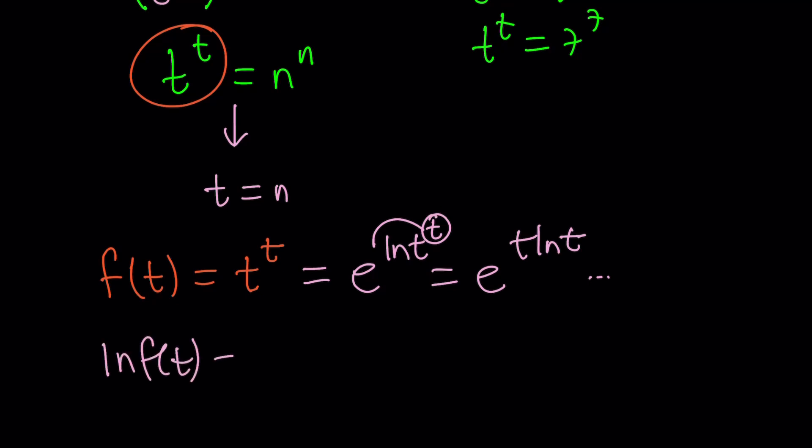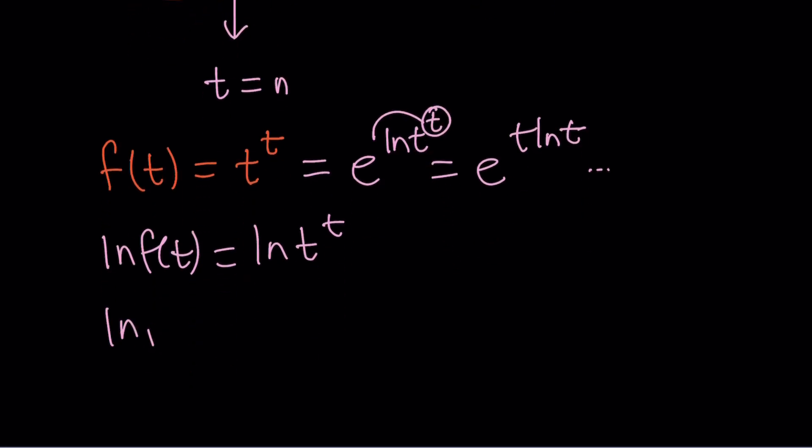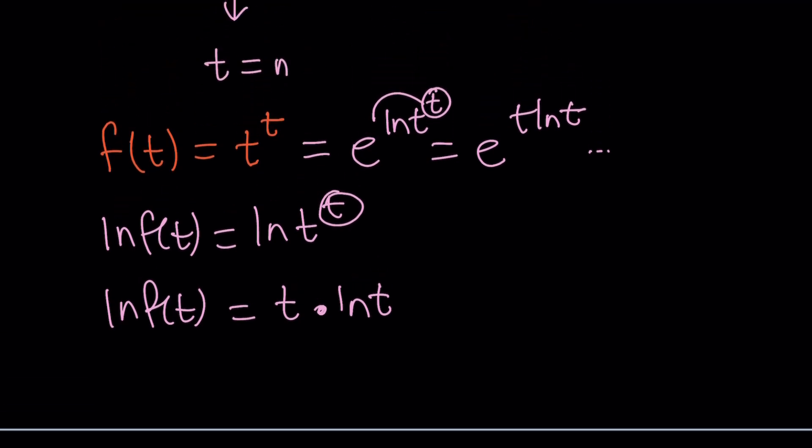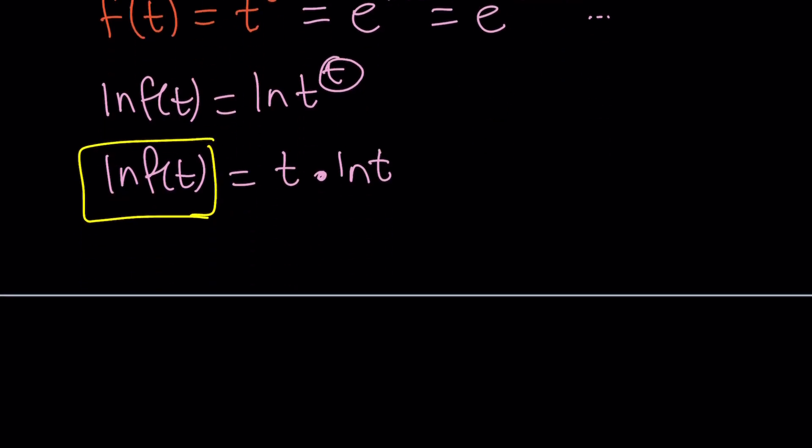Or you can differentiate it differently, like this is usually the method that I follow. You can ln both sides, which is the same thing by the way but I just like it better, and then use properties of logs, move this to the front, and then just differentiate like this. Same thing because if ln f of t is t ln t, then f of t is e to the power t ln t.